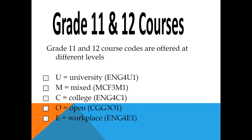Grade 11 and 12 courses are offered at the U for University, M for Mixed, and C for College level. For degree programs at colleges, students need six grade 12 U or M courses including ENG 4U, just as they would when applying to university. For diploma programs, colleges will look at U, M, and C courses and use these in calculating their average.